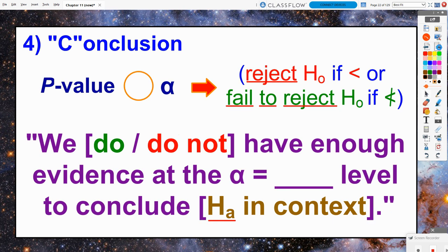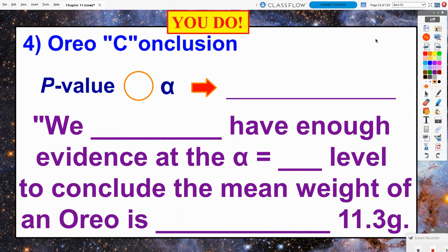What does that look like for our Oreo problem? Well, you tell me, because this is the you do. Tell me how that p-value compares to our alpha. What is going to be your decision? Are you going to reject or fail to reject? And then tell me, do you or do you not have enough evidence at the whatever alpha level to conclude that the mean weight of an Oreo is what exactly to 11.3 grams? Make sure that your conclusion is ultimately about the alternate hypothesis. And we will discuss this the next day in class.